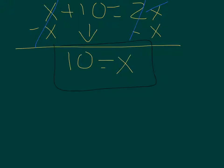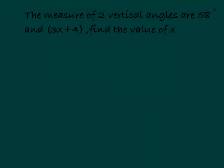Just in case you didn't get it, we will be doing a similar question just like this one. Our next question is: The measure of two vertical angles are 58 degrees and 3x plus 4. Find the value of x. It's quite easy. You have to, of course, write down the question first.